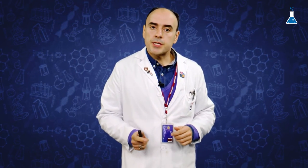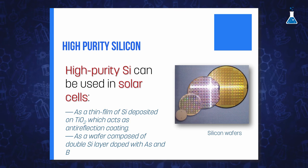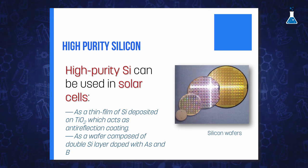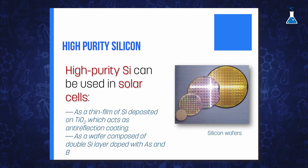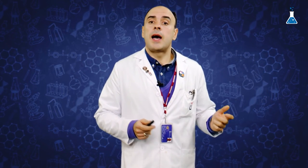Highly pure silicon can also be used in solar cells. By employing thin-film photovoltaic modules of silicon deposited on titanium dioxide, sunlight can be converted to electricity in an environmentally friendly manner. Alternatively, a wafer composed of a double silicon layer doped with arsenic and boron respectively can be used, and when exposed to sunlight, electrons flow between the P and N layers, generating an electric current.